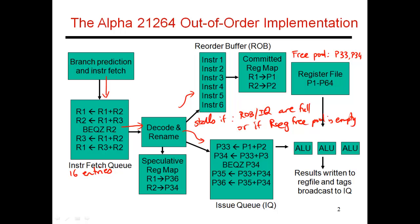You typically size each of these structures so that no one of them becomes a dominant bottleneck. If you have 32 architected registers and 64 physical registers, you have 32 extra rename register names, which means you should correspondingly size your reorder buffer to have about 40 entries. That means you can bring in 40 instructions, out of which 32 may need a register destination and 8 might be branches or stores that don't. So the issue queue would have a size of roughly 20.